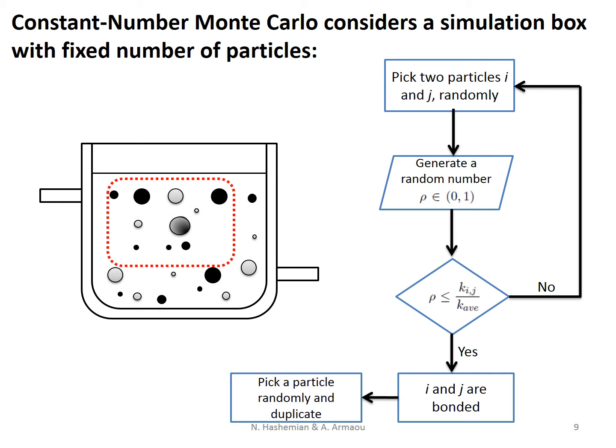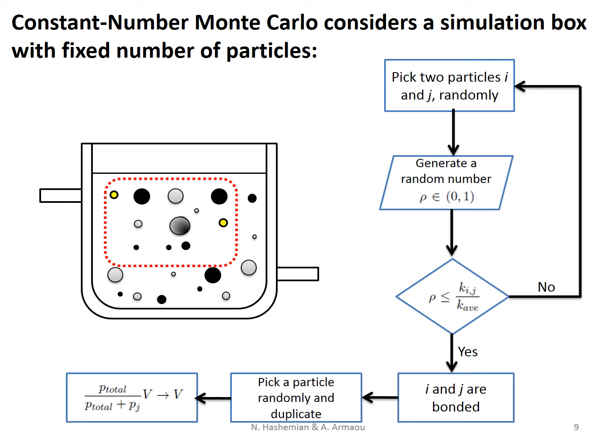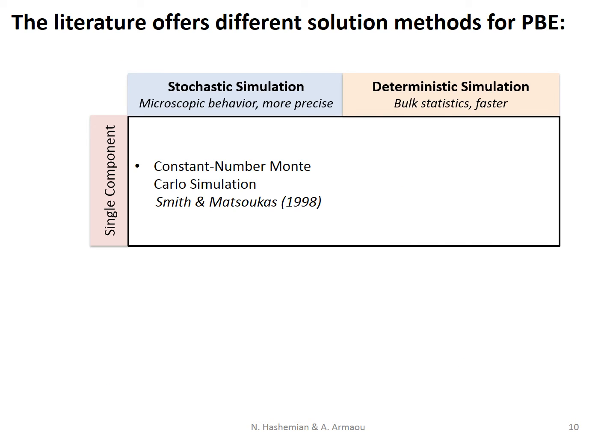After an agglomeration, the number of particles in the box decreases, so we randomly pick a particle in the box to duplicate. To keep the real concentration, the box must become larger. Smith and Matsukas introduced constant number Monte Carlo simulation for single component processes. This method is reliable but slow for applications such as state estimation and control.